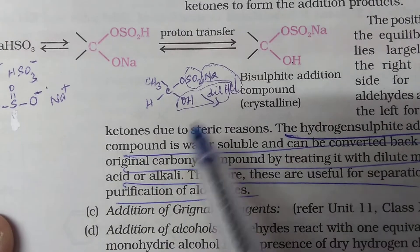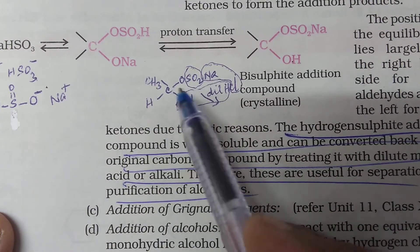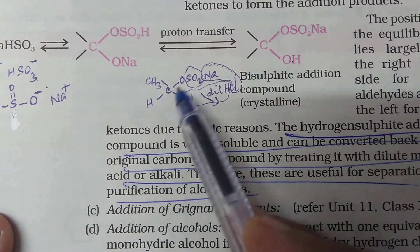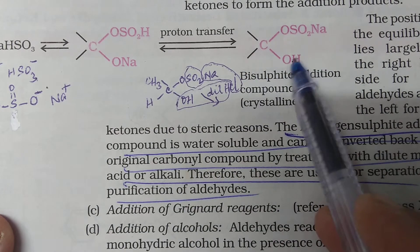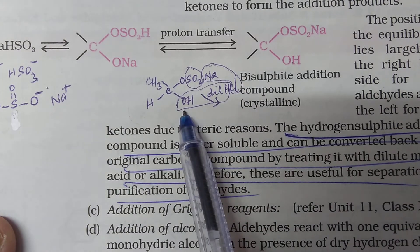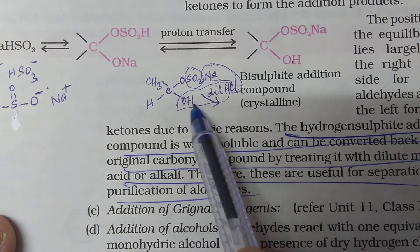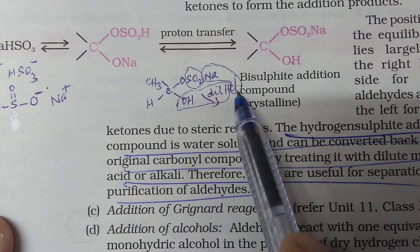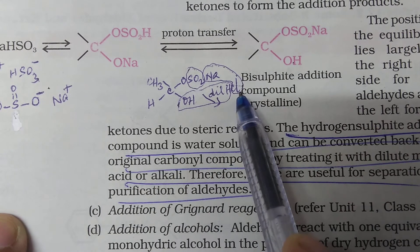Now, how you see? This is the addition product you are having. CH3, CH, OSO2Na. Whatever is given here, I have written the same thing. OH. Now, supposing you are treating it with a dilute HCl. You can get it back by treatment with either dilute acid or a dilute base.